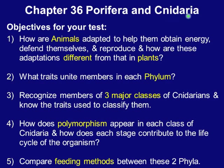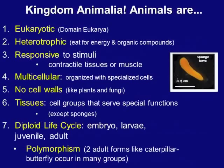For Chapter 36, which covers Phyla Porifera and Cnidaria, your objectives for your test are: 1. How are animals adapted to obtain energy, defend themselves, and reproduce, and how are these adaptations different from plants? 2. What traits unite members in each phylum? 3. Recognize members of the three major classes of cnidarians and know the traits used to classify them. 4. How does polymorphism appear in each class of Cnidaria and how does each stage contribute to the life cycle? 5. Compare feeding methods between these two phyla.